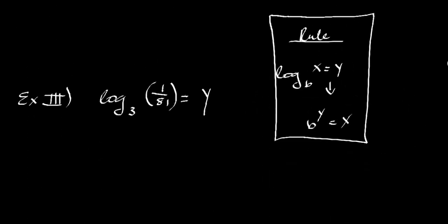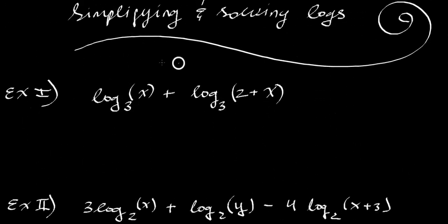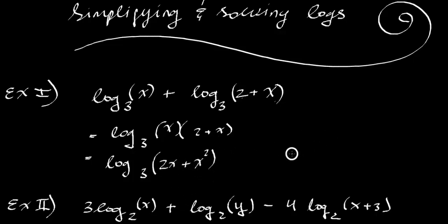Well, automatically you can see that you have the same base, the base of 3 for each of these pieces. What does the rule say about two things added together with the same base? You can rewrite it as a multiplication, multiply them together under the same base.